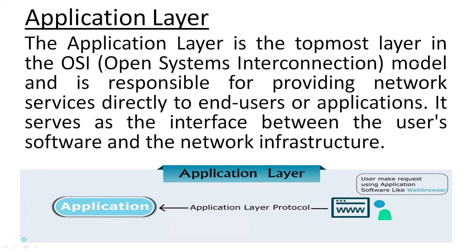Welcome to my YouTube channel. Today we are going to discuss the application layer. Before that, we have discussed the OSI model. The application layer is the first and topmost layer of the OSI model. It is responsible for providing end users or applications a user interface, or generating data over the networks using a browser or any application.